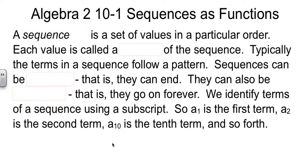A sequence is nothing more than a set of values that are in a certain order. The order that they're in is important. Each one of those values has a special name, it's called a term. Don't get that confused with things like like terms that we've dealt with earlier. These are just items that are in the sequence. Typically, they follow some kind of a pattern.